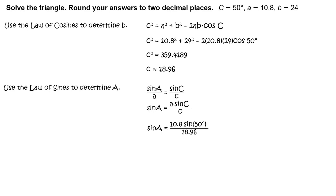Next, substitute 10 and 8 tenths for the length of side a, 18 and 96 hundredths for the length of side c, and 50 degrees for the measure of angle C. Use technology. Sine of the measure of angle A approximately equals 4364 ten-thousandths, which means the measure of angle A approximately equals 25 and 87 hundredths degrees.